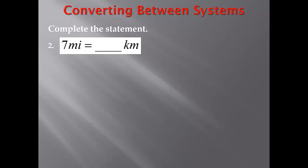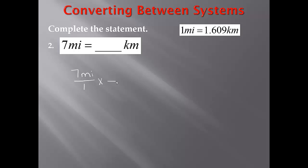Now for my second problem: 7 miles equals blank kilometers. First, I need to figure out my conversion factor, and that is 1 mile equals 1.609 kilometers. I will use this conversion factor to help me solve the problem. I have 7 miles, so I'm going to write 7 miles over 1, then multiply by the conversion factor. I'm converting to kilometers, so I put that in the numerator and miles in the denominator. Using my conversion factor: 1 mile, so 1 goes with miles, is equal to 1.609 kilometers, so with my kilometers I have 1.609.